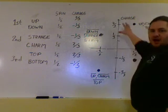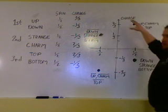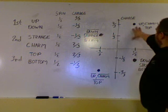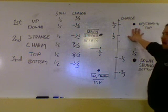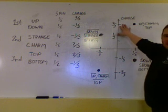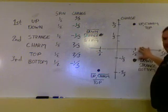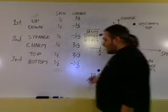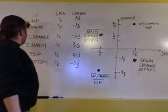So plotting this with charge on my Y and spin on my X, I can see that my up, my charm, and my top align in this corner, experiencing a hyper charge, all with a half spin. Where my anti-particle, my anti-up, my anti-charm...